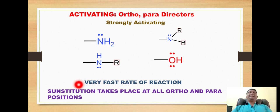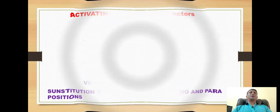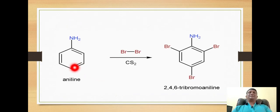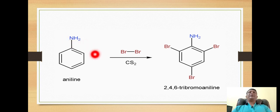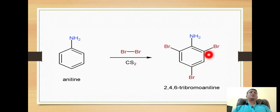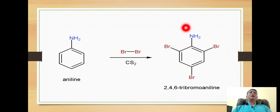In these cases, substitution takes place at all ortho and para positions. For example, when aniline — where the amino group is attached to a benzene ring — undergoes halogenation, that is bromination in the presence of carbon disulfide, we get the product 2,4,6-tribromoaniline. The electrophile bromonium ion gets attached at all ortho and para positions with respect to the amino group.